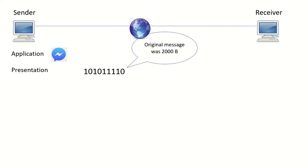The Presentation Layer is also responsible for compression and decompression of your actual data. For example, if the data has a file size of 2000 bytes, the Presentation Layer will compress it to 1700 bytes, making it easier to send over the network. The Presentation Layer will also make sure your actual data is protected by encrypting it — it is responsible for both encryption and decryption of your data.